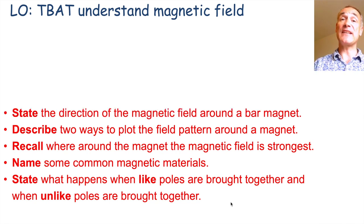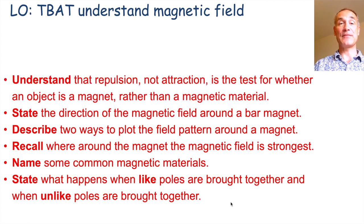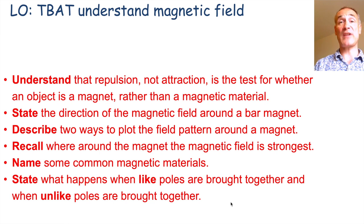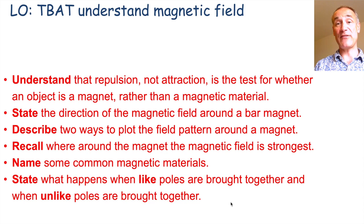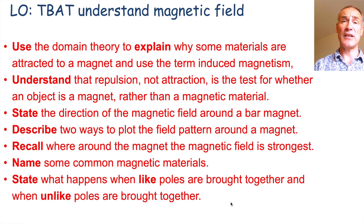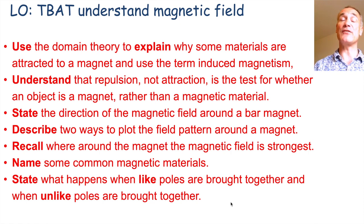You should be able to state the direction of the magnetic field around a magnet. You should be able to understand that it's repulsion not attraction that's a test for whether an object is a magnet, a magnetic material, or not a magnetic material at all. And finally as an extra challenge you could use the domain theory to explain why some materials are attracted to magnets and others aren't.